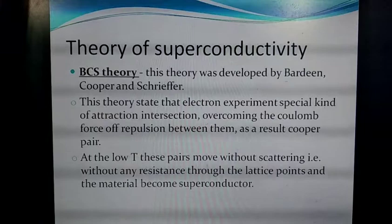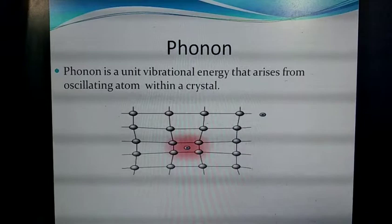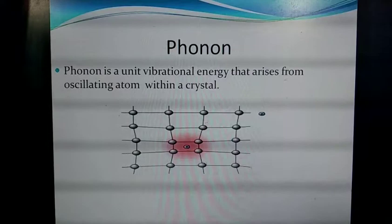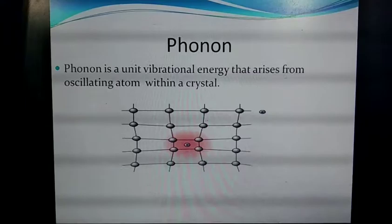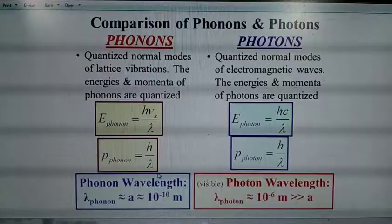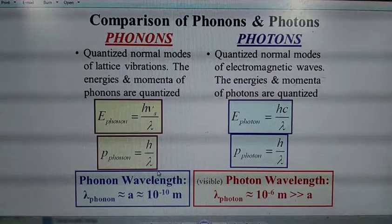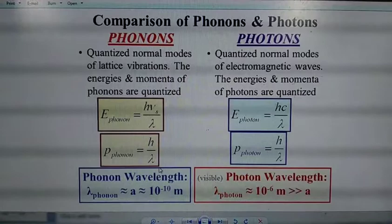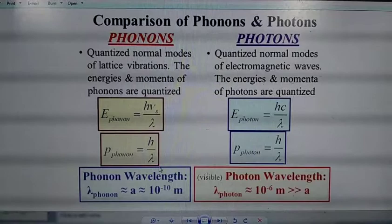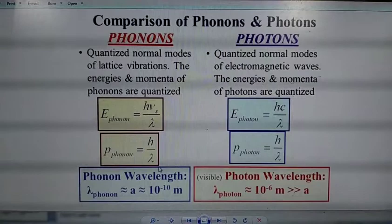The phonon is the quantum of a periodic arrangement of atoms in any crystal. In the diagram, you can see the arrangement of atoms and the electrons which distort when moving from one side to another side of the crystal. The difference between a phonon and a photon is that a phonon is the quantized normal mode of lateral vibration, while a photon is the quantized normal mode of an electromagnetic wave. The energy of a phonon is given by hv/λ and for a photon by hc/λ.